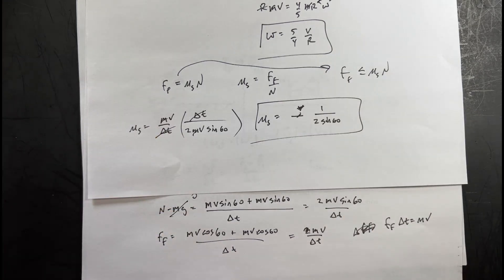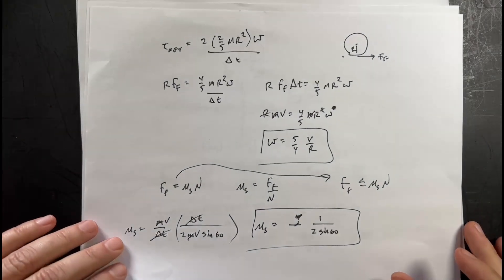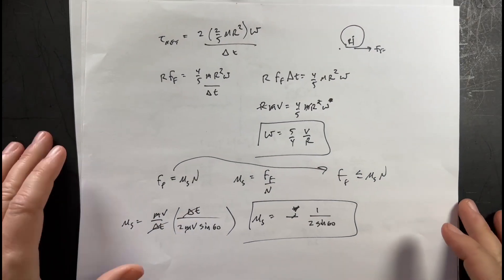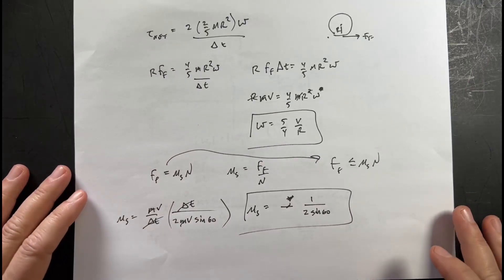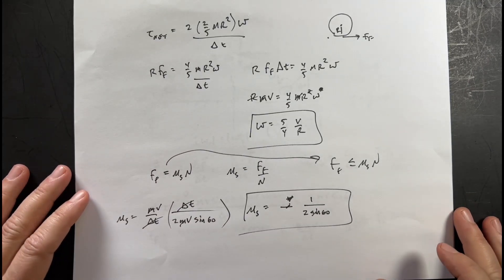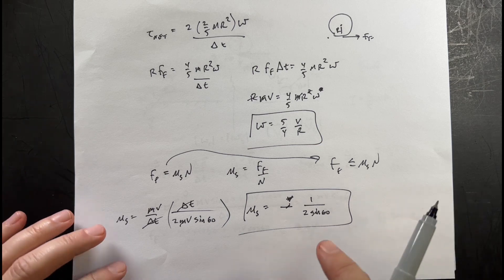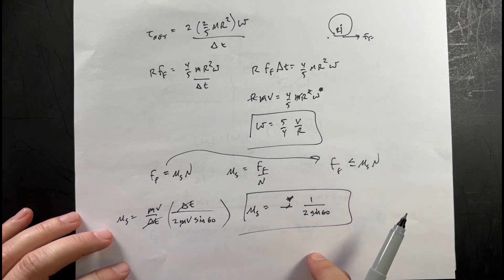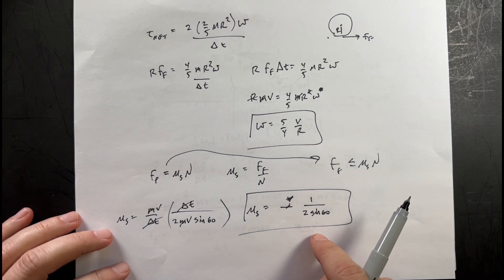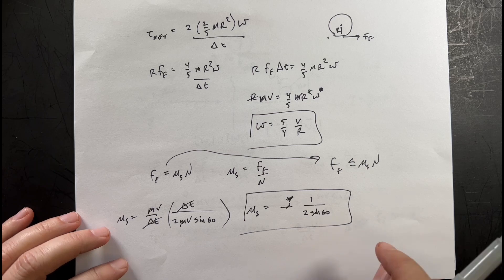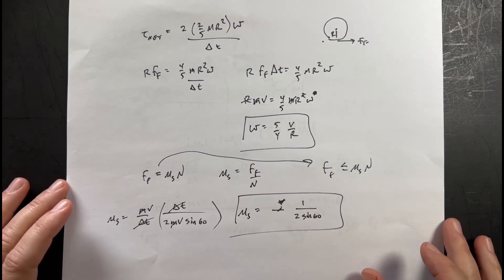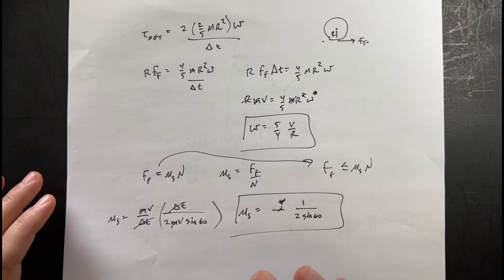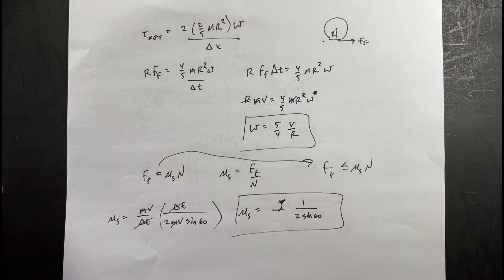So those are my two answers: ω = 5v/(4R) and μ_s = 1/(2·sin60). I don't know that these are right — I don't feel 100% confident in them — but I'm going to submit these as my final answers. Check the playlist down below, try to do these problems yourself, and I'll keep working through more of them. See you in the next problem.